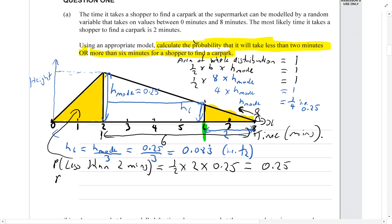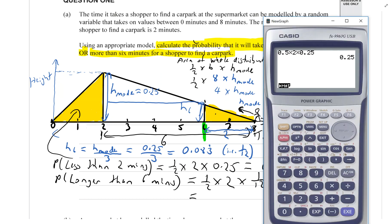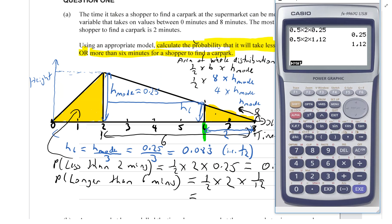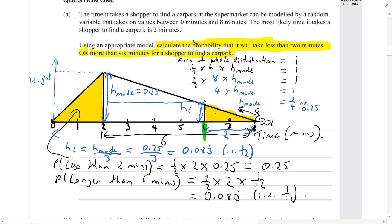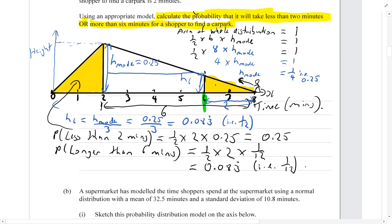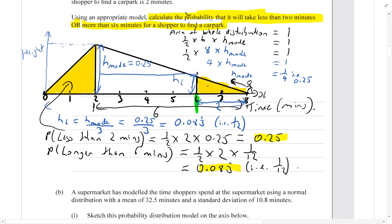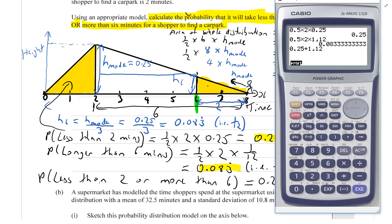And then I want to find the probability that it takes longer than six minutes. So, it has a base of two and a height of 0.083 recurring or one twelfth. So, one half times its base times its height. And I am going to use the fraction version because it's more accurate. And we get one twelfth or 0.083 recurring again. And the probability that it takes either less than two or more than six is just going to be the sum of those added up. So, 0.333 recurring or one third is the answer.